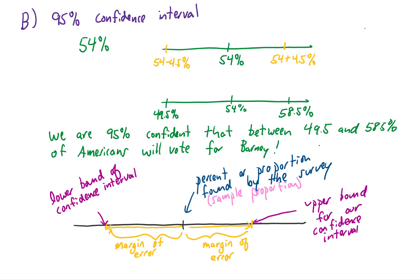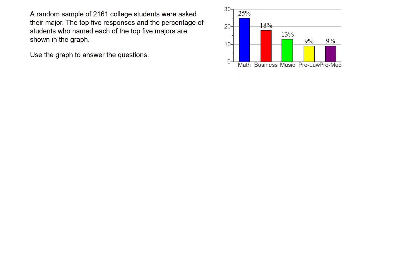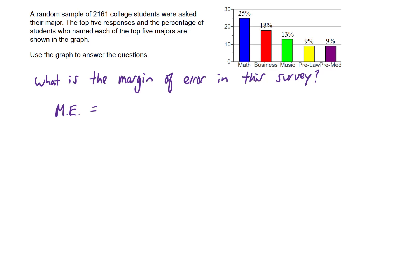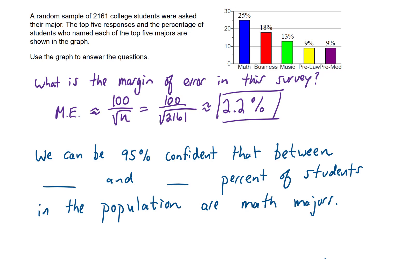We call this a 95% confidence interval in all of these problems. Let's look at the next example. A random sample of 2161 college students were asked their major, and the top five responses are given in a table. The margin of error is 100 divided by the square root of 2161, which gives approximately 2.2% — that's our margin of error.